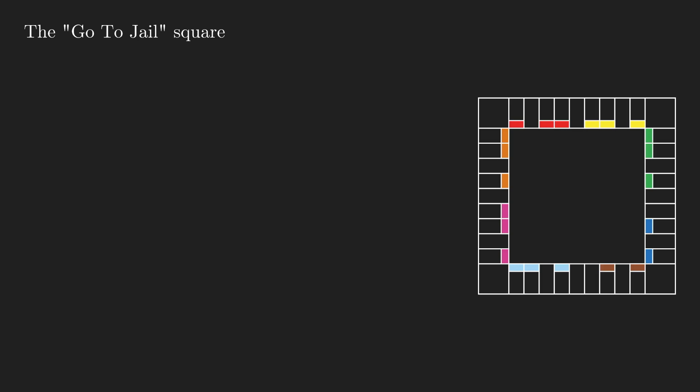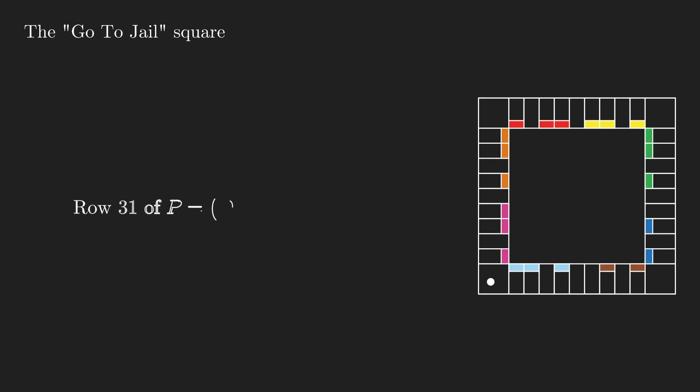Let's tackle this one by one. When we end up in the Go to Jail square, we are sent to jail immediately without fail. This means that the probability of going from this square to every other, except jail, is zero. So the row of our transition matrix P corresponding to Go to Jail is just a bunch of zeros, except in the jail square, where there's a one.